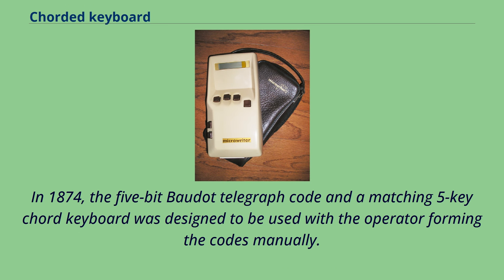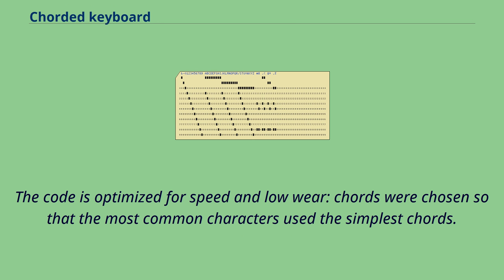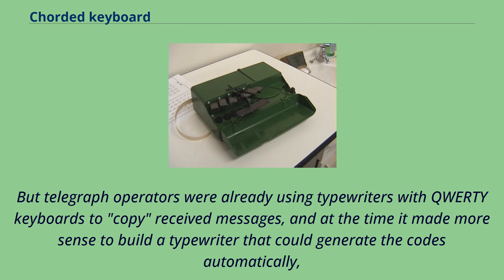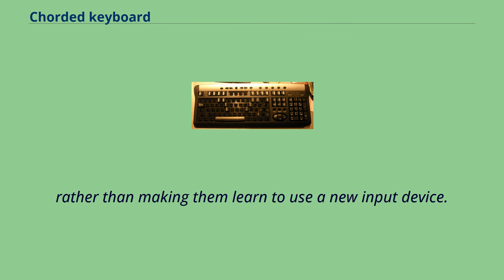In 1874, the 5-bit Baudot telegraph code and a matching 5-key chord keyboard was designed to be used with the operator forming the codes manually. The code is optimized for speed and low wear; chords were chosen so that the most common characters use the simplest chords. But telegraph operators were already using typewriters with QWERTY keyboards to copy received messages, and at the time it made more sense to build a typewriter that could generate the codes automatically rather than making them learn a new input device.